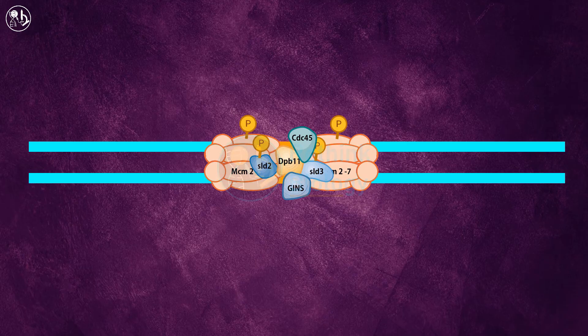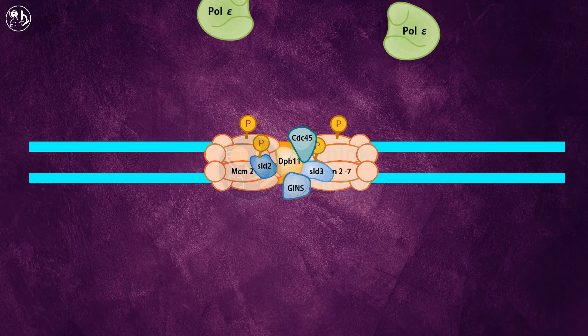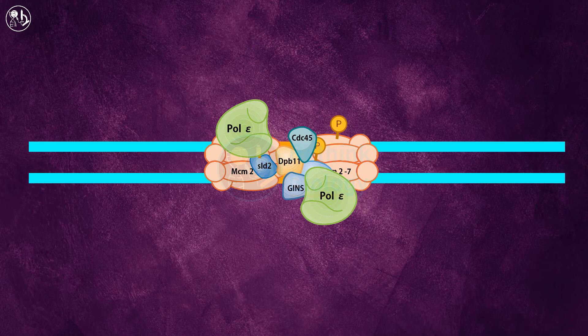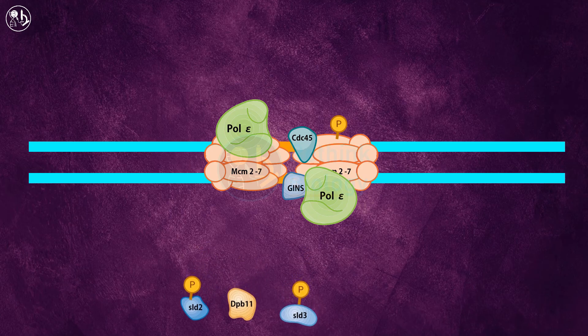Before unwinding DNA, polymerase epsilon is recruited to the helicase at both strands. After the formation of this complex, SLD2, SLD3, and DPB11 are released and the unwinding of DNA strands starts.